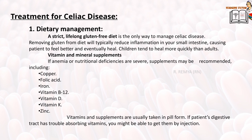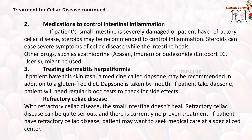Medications to control intestinal inflammation: if the patient's small intestine is severely damaged or the patient has refractory celiac disease, steroids may be recommended to control inflammation. Steroids can ease severe symptoms while the intestine heals. Other drugs such as azathioprine or budesonide might be used. For treating dermatitis herpetiformis, a medicine called Dapsone may be recommended in addition to a gluten-free diet. Patients taking Dapsone will need regular blood tests to check for side effects.